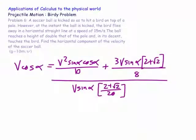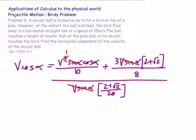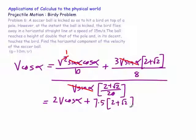Writing v cos alpha as the expression with distances over time, we can simplify: v sine alpha cancels, one of the v's cancels. Multiplying everything by 20, we get 2v cos alpha, plus 7.5 lots of (2 plus root 2), all over (2 plus root 2).